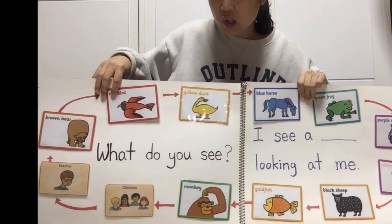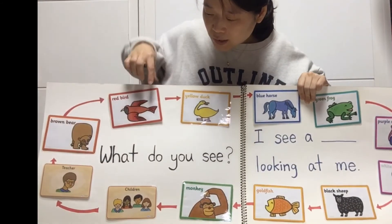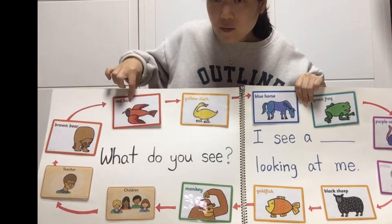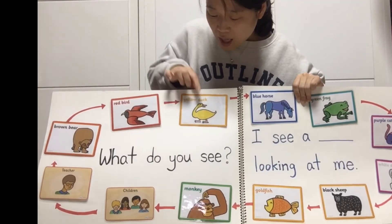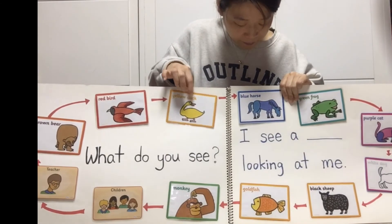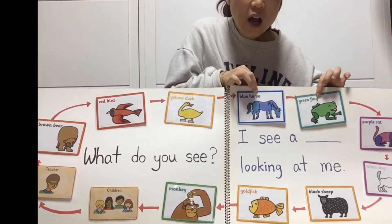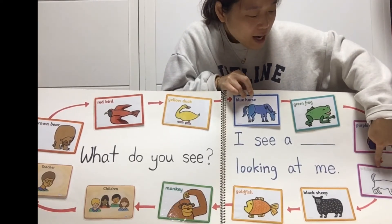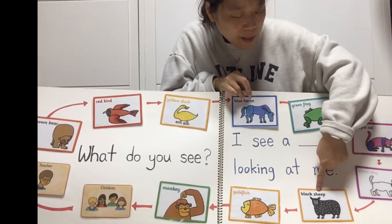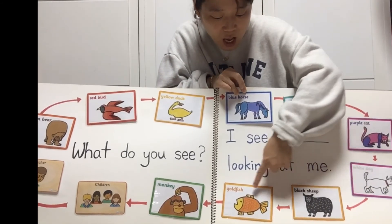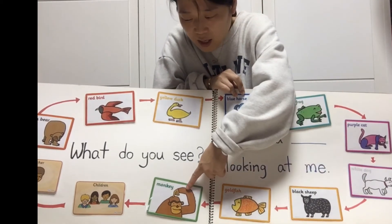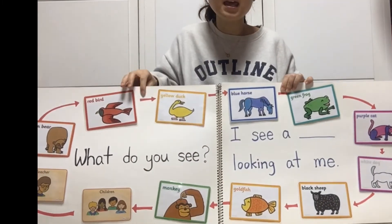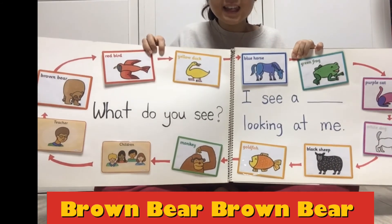Teacher, teacher, what do you see? I see a brown bear, a red bird, a yellow duck, a blue horse, a green frog, a purple cat, a white dog, a black sheep, a goldfish, a monkey, and children looking at me. That's what we see.